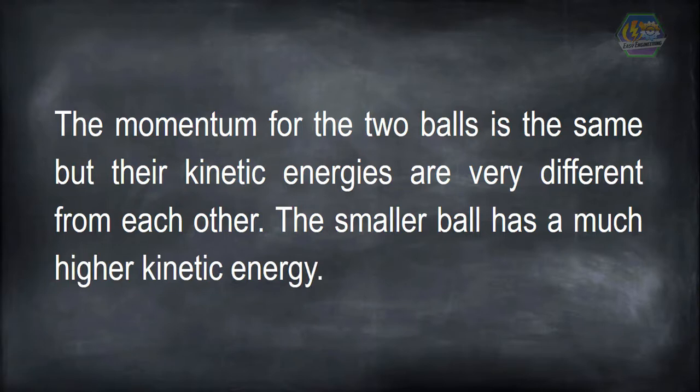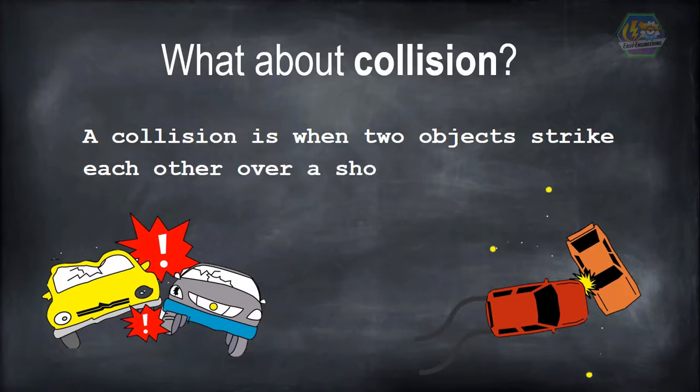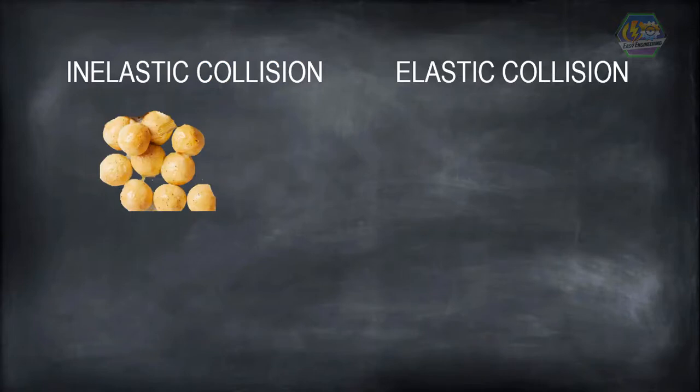Now what about a collision? A collision is when two objects strike each other over a short space of time. A collision can either be elastic or inelastic. Inelastic collisions are mushy, like dough balls, while elastic collisions are bouncy, like rubber balls.